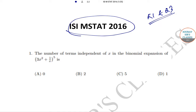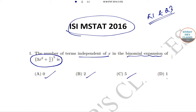Question number 1 says that the number of terms which are independent of x in the binomial expansion of (3x² + 1/x)^5 is either 0, 2, 5, or 1. So we have to find out the number of terms in the expansion which are independent of x, or in which the power of x is 0.